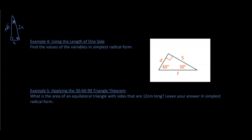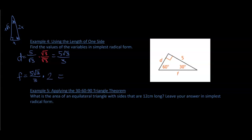Find the values of the variables in simplest radical form. Here f is the hypotenuse and we currently have the long leg. To get the short leg d, we divide by the square root of three, then rationalize: d equals five divided by the square root of three, which gives five times the square root of three over three. To find f, we take d and multiply by two: f equals ten times the square root of three over three.